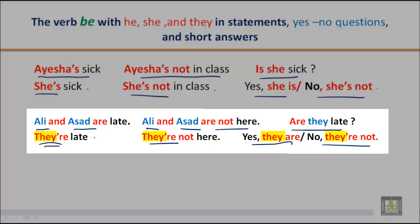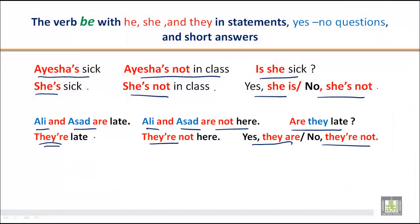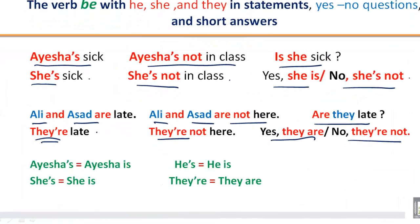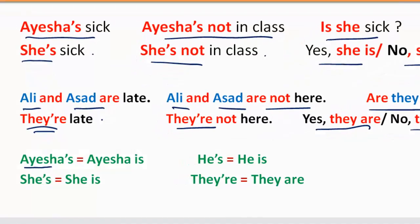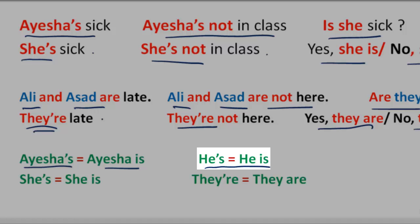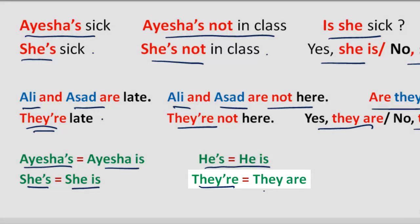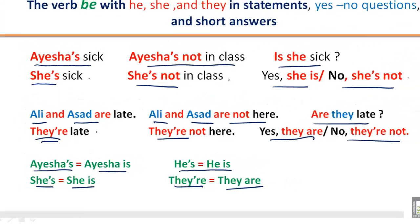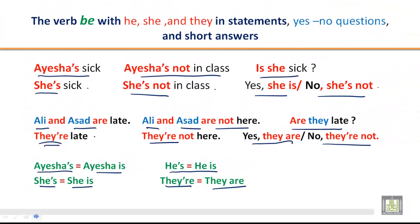Hope you have got an idea how to use the verb 'be' with he, she, and they in statements and yes/no questions. We also use contractions: 'Aisha's' for 'Aisha is', 'he's' for 'he is', 'she's' for 'she is', and 'they're' for 'they are'.